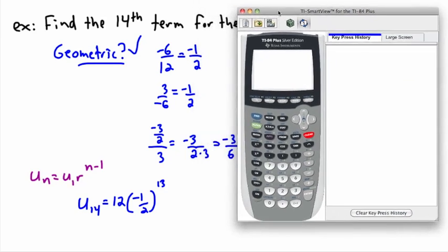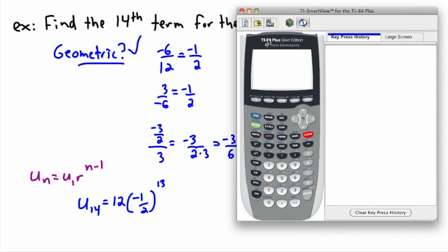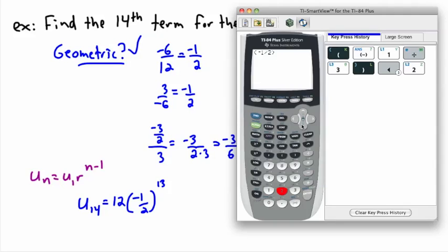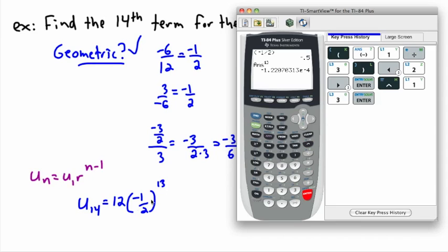I'm going to show you a good trick, at least if you use a TI 83 or 84. In this case I'm using a TI 84. So I'm going to say my fraction in brackets: negative 1 over 2. I want to take that answer and raise it to the power of 13. I get some negative answer. I multiply that answer by 12 and I get this answer.